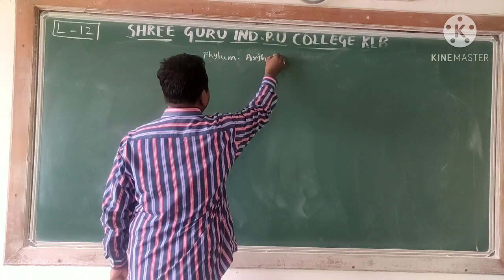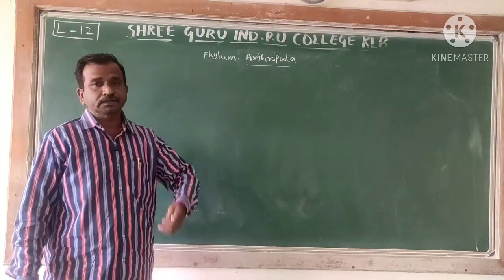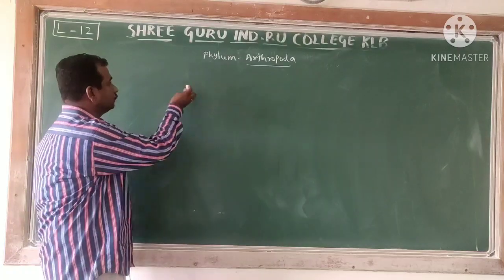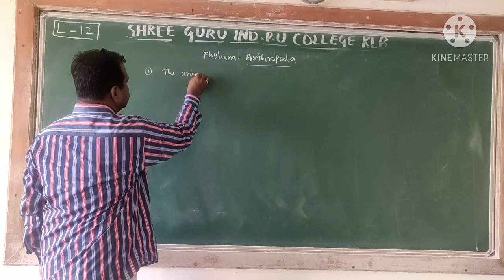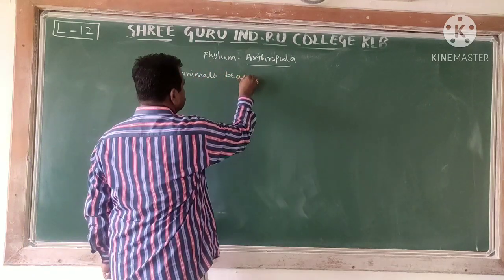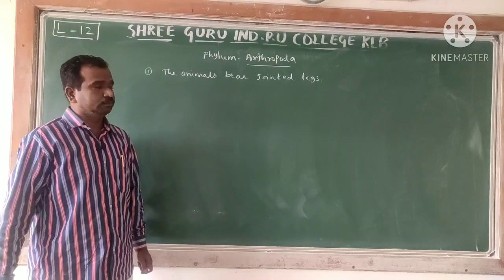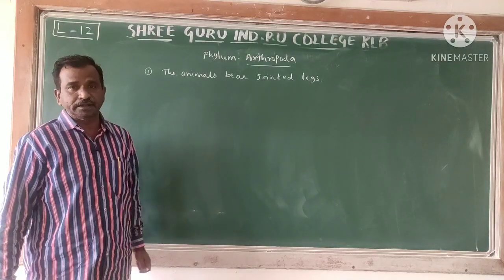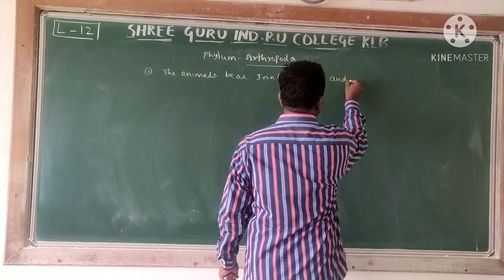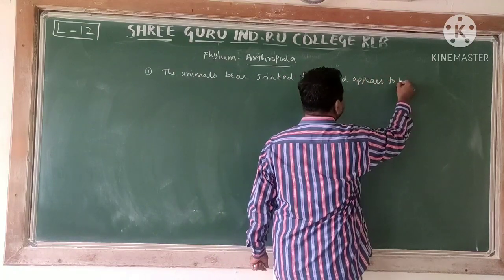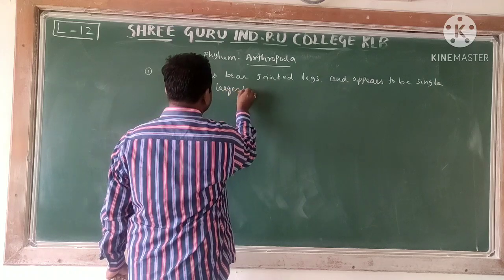We are moving toward Phylum Arthropoda. The main characters of Arthropoda: number one, the meaning of the phylum — the animals bear jointed legs. 'Arthro' means jointed and 'poda' means legs. The animals bearing jointed legs appear to be the single largest phylum.